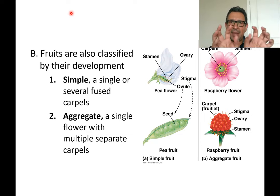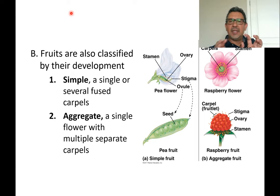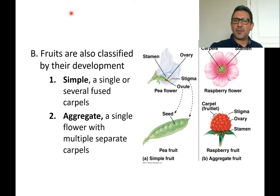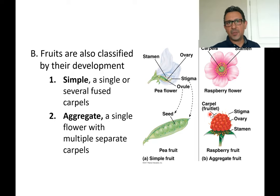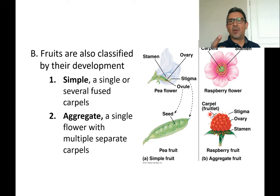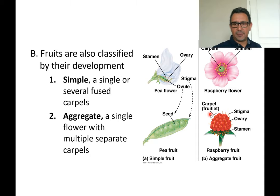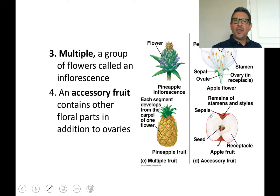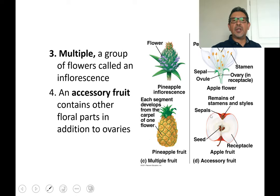Aggregate fruits come from a single flower that has separate carpels which do not fuse together, resulting in a cluster of many little fruitlets. Raspberries and blackberries are examples of aggregate fruits — one flower with many carpels, but the carpels never fused, giving you the individual fruitlets connected together.